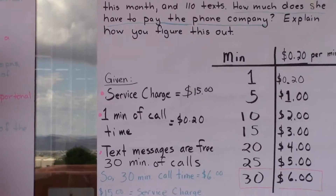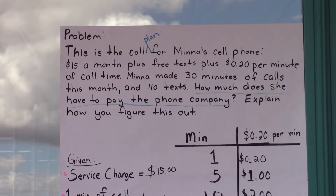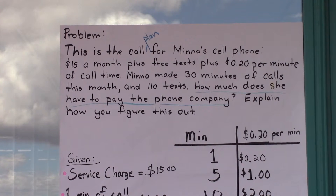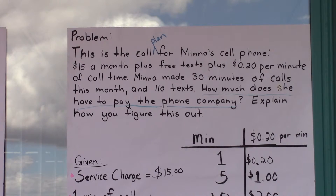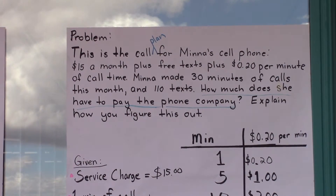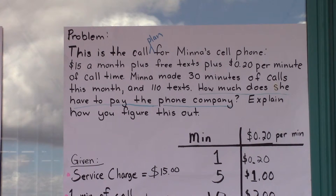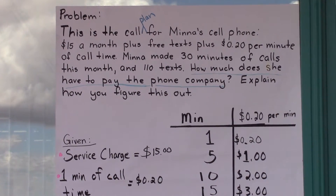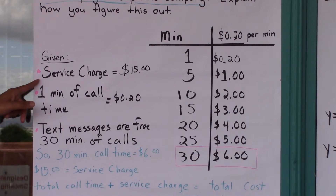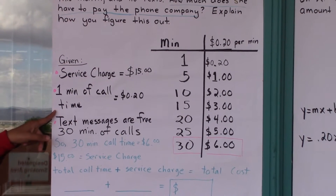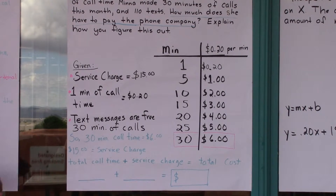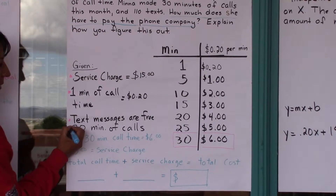The problem is: this is the call plan for Mina's cell phone. $15 a month plus free texts plus $0.20 per minute of call time. Mina made 30 minutes of calls this month and 110 texts. How much does she have to pay the phone company? Explain how you figured this out. What is given in our problem is: the service charge is $15, one minute of call time equals $0.20, text messages are free, and there are 30 minutes of calls.